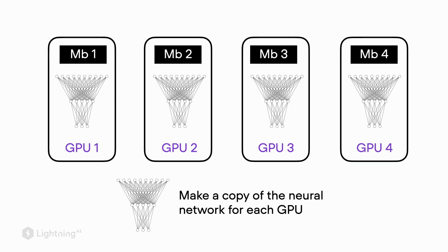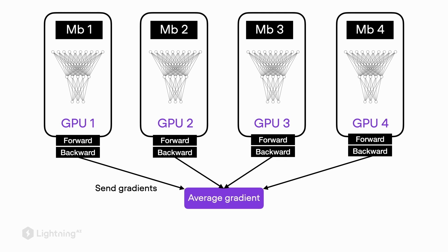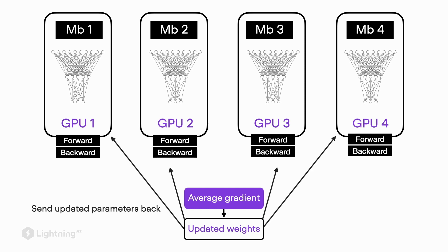In this video we are going to talk about regular data parallelism versus distributed data parallelism. In the previous video we introduced the data parallel concept — we placed a micro batch on each GPU along with a copy of each model, computed the forward pass and backward pass on each GPU separately, then computed the average gradients across GPUs, computed the updated weights, and sent the weight updates back to each GPU to update the model.